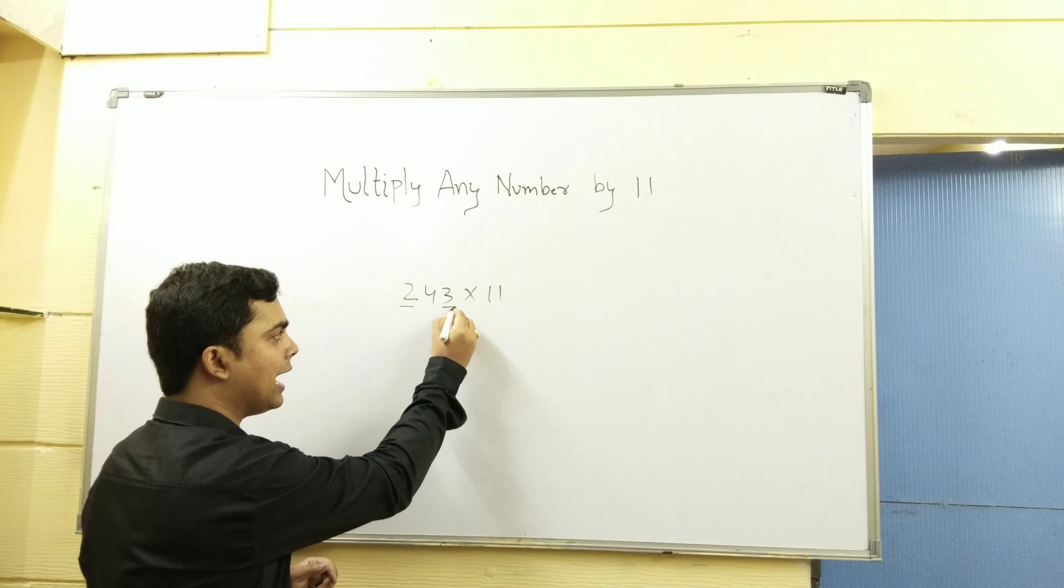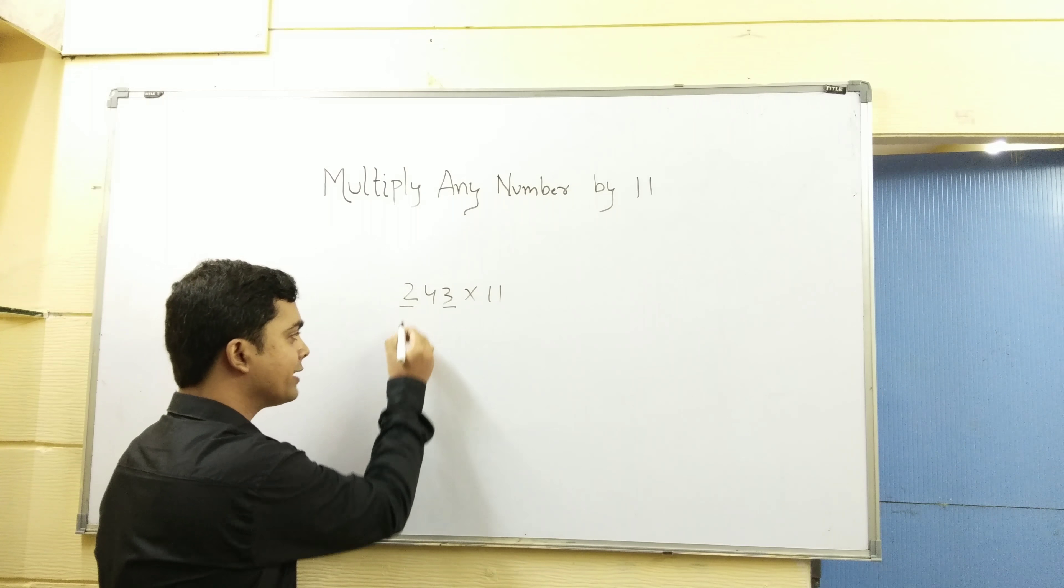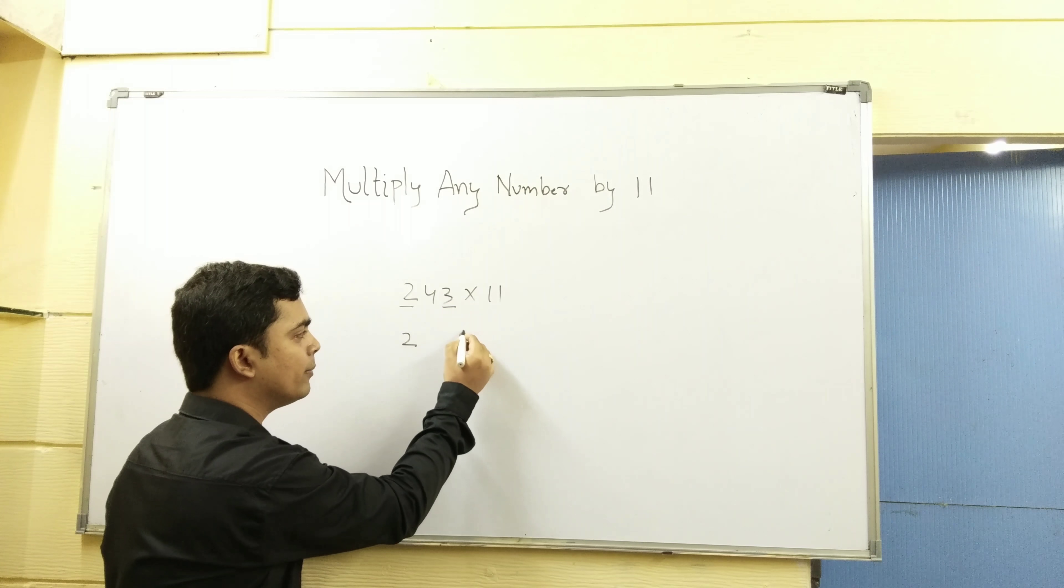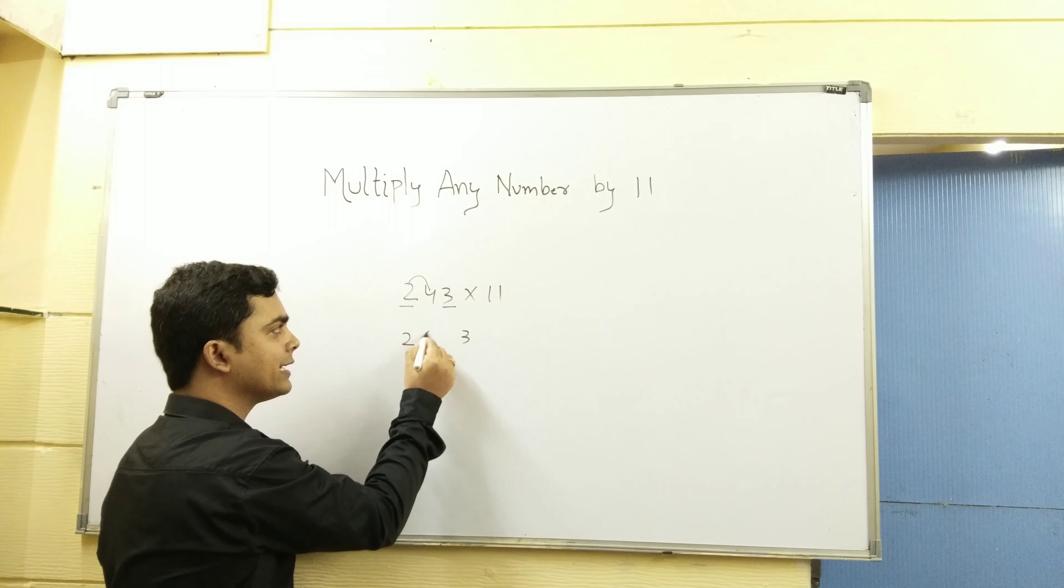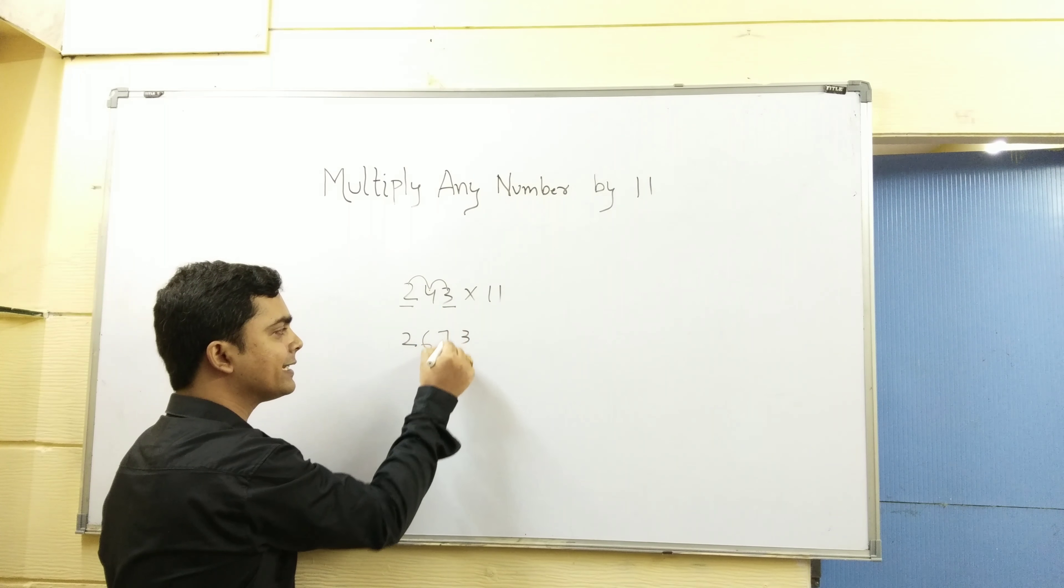First number and last number. First number, last number. 2 plus 4, 6. 4 plus 3, 7.